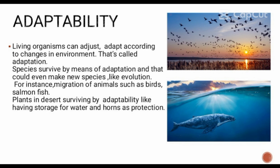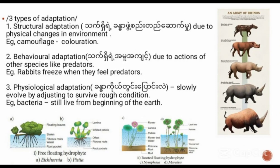Plants in the desert survive with adaptability, like having storage for water and thorns as protection. There are three types of adaptation. The first is structural adaptation, which refers to physical changes in response to the environment. For example, camouflage coloration.